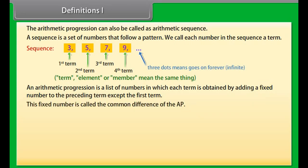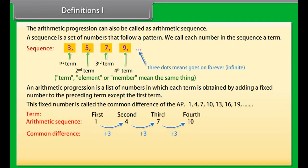This fixed number is called the common difference of the AP. Look at this sequence — we can see that the common difference is 3. In general, we can write an arithmetic sequence as: A, A+D, A+2D, A+3D, and so on, where A is the first term and D is the common difference.